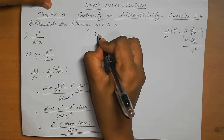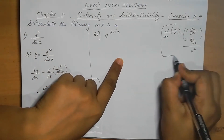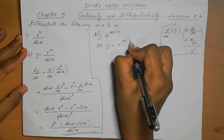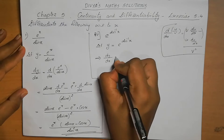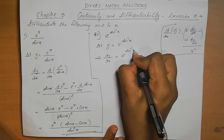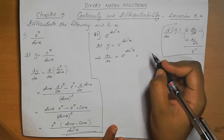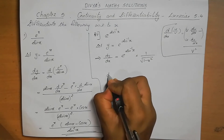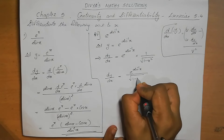Question number 2: e^(sin⁻¹x). Here also we are going to do the differentiation with respect to x. Let y equal to e^(sin⁻¹x). Differentiating with respect to x: dy/dx. Derivative of e^x is e^x only, so that gives e^(sin⁻¹x). Then multiply by derivative of sin⁻¹x, which is 1 by root of 1 minus x squared. So dy/dx equals e^(sin⁻¹x) by root of 1 minus x squared.